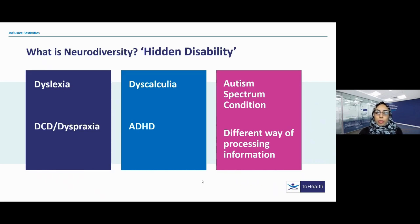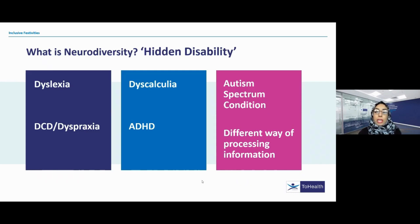People who are neurodiverse can be found across the spectrum of intellectual ability. The impact of their conditions can vary on their day-to-day life, and it does also vary from person to person. There can also be a co-occurrence of these conditions, meaning that they can occur together, so one or more of these conditions can exist in a person.